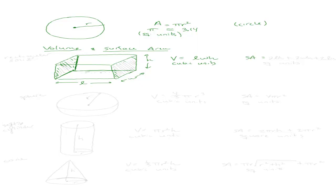Surface area is different — it's how much area it would take to wrap the object, like how much wrapping paper you'd need for a present. The surface area of a rectangular solid is 2(length × height) + 2(width × height) + 2(length × width), given in square units. We're finding the area of each rectangular face. Each pair of opposite sides gives us the factor of 2, and adding all faces gives the full surface area formula.